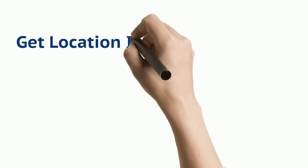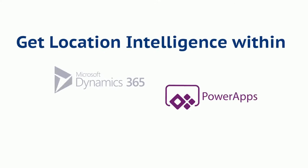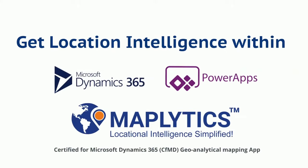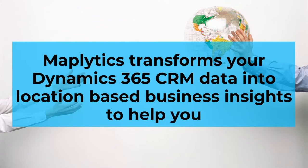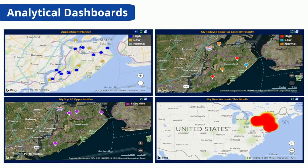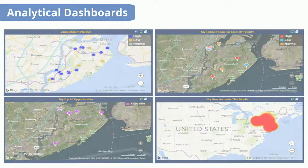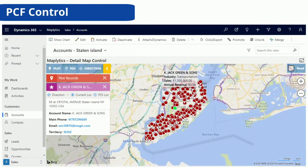Get locational intelligence within Dynamics 365 CRM and PowerApps with Maplytics. Maplytics transforms your Dynamics 365 CRM data into location-based business insights to help you get a complete overview of your business right within Dynamics 365, analyze and understand market geography with analytical dashboards, do further drill-down analyses with PCF controls without switching the screen, and perform actions right from the ribbon bar on highlighted records, as well as perform Maplytics features using Detail Map Control.